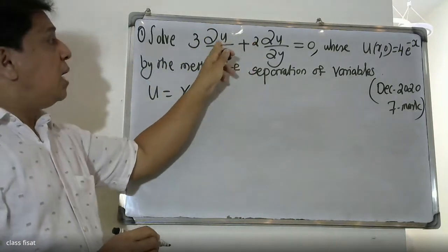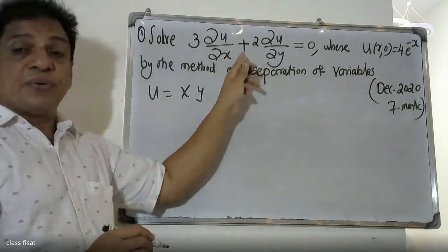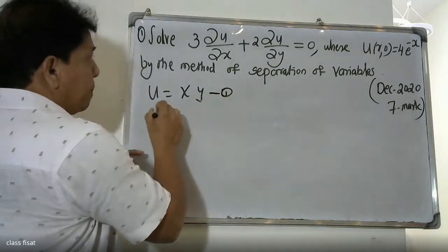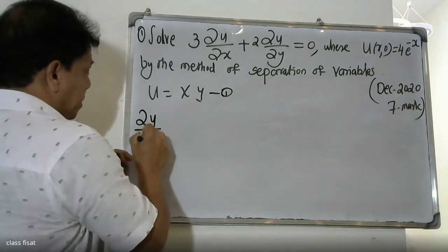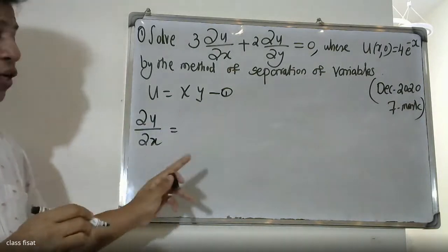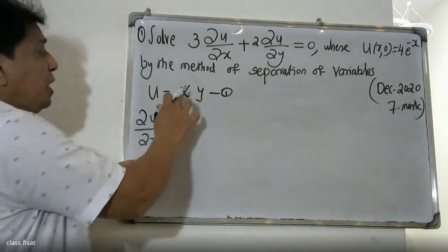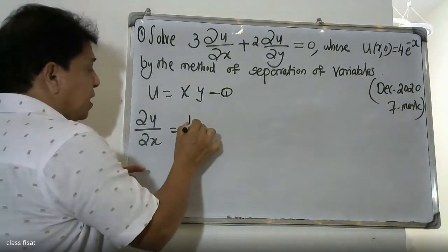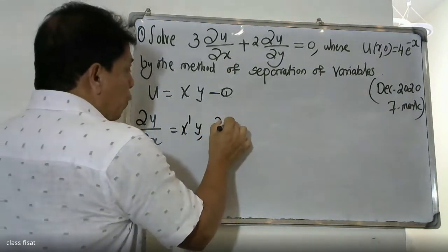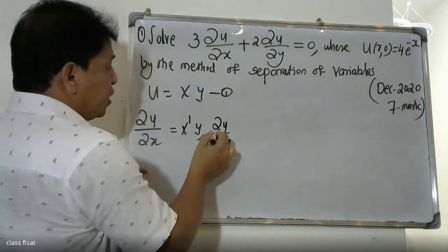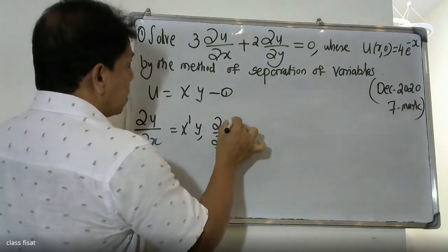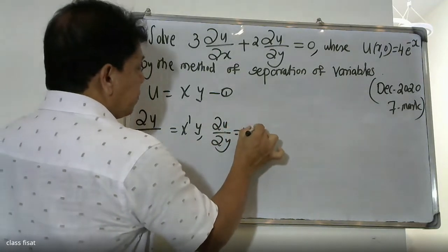We compute ∂u/∂x: since u = X·Y, x is treated as partial differential, so ∂u/∂x = X'·Y. The value of ∂u/∂y: y is the partial differential direction, so ∂u/∂y = X·Y'.